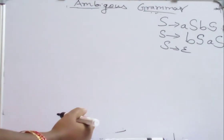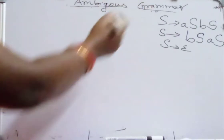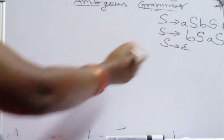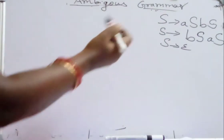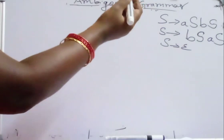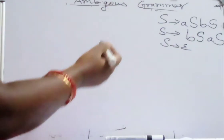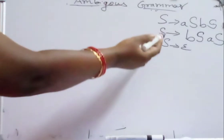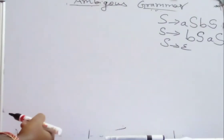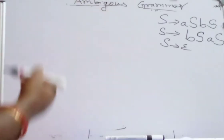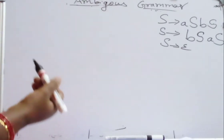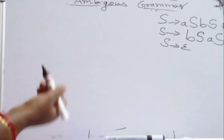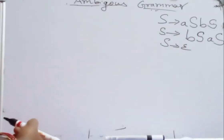Hello everyone, welcome to my channel. Today I am checking the ambiguous grammar. So now we have to check whether this grammar is ambiguous or not. The sentence has to be derived in two different ways, either by applying LMD or RMD twice. And if you are able to get the string W using this grammar in two different ways and construct a parse tree, and if the structure of the parse trees are different, then we say that the grammar is ambiguous.